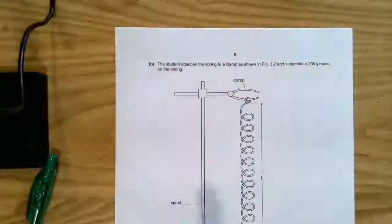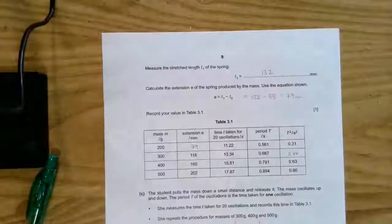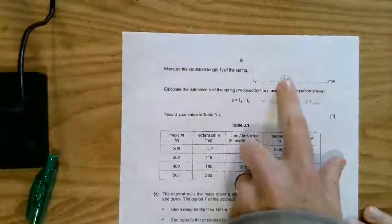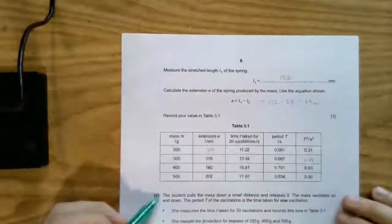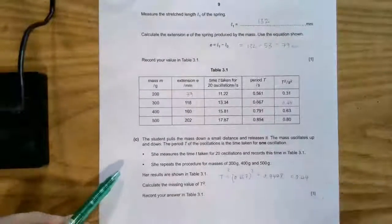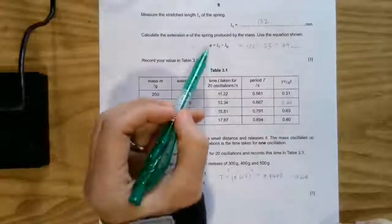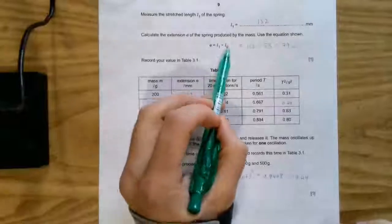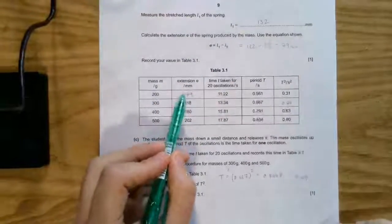You have to do the same thing again. For B, I think we're all able to use a ruler. Okay, and I measured that to be 132. Again, you're taught through this table. You're asked to do a little bit of calculations. Extension. Well, I've just calculated my extension, which is just the length minus length 0. 132 minus 53 is 79 millimeters.